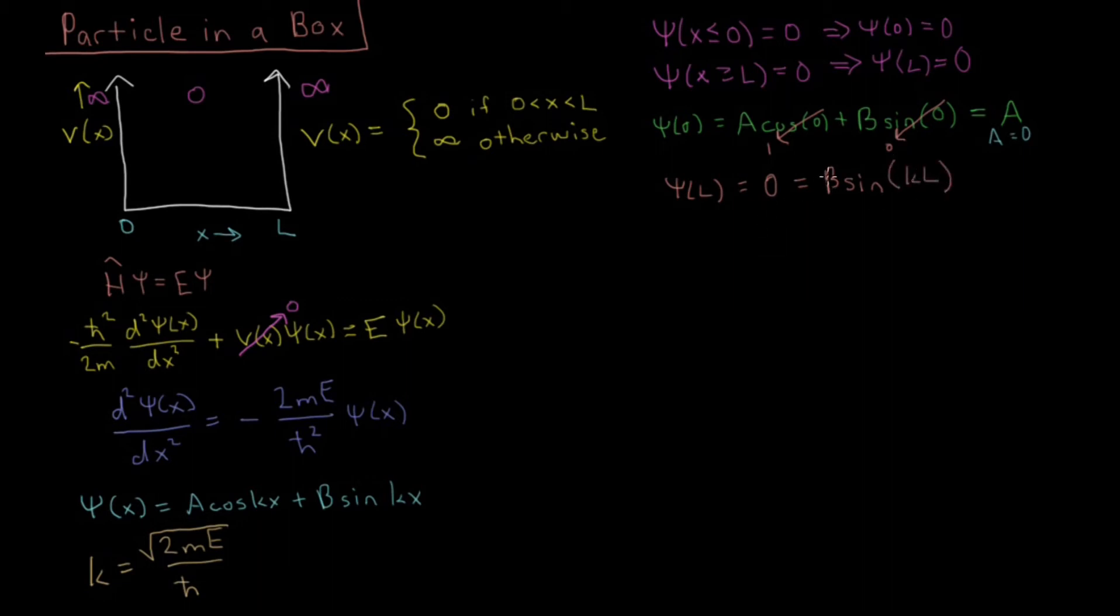Now once again, we could make B equal 0, but we don't want to make B equal 0, because then the amplitude is just 0 everywhere. And the Born interpretation that we talked about last time means that the square of the wave function is the probability of finding the particle somewhere inside of a certain region. So if we have a wave function which is 0 everywhere, then we have no particle. So we want to have a particle, so we don't want the solution of psi of x equals 0 everywhere, we want the other solution.